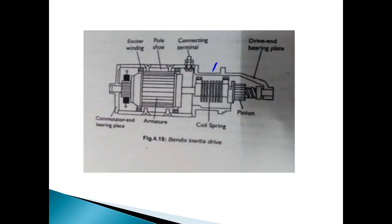Once the starter motor is switched off, the speed at the armature shaft changes and the engine begins running independently. Due to this, the pinion returns to its original position and disengages from the flywheel. The drive pinion mechanism then releases, completing the disengagement cycle.